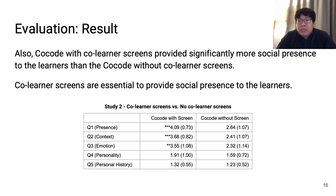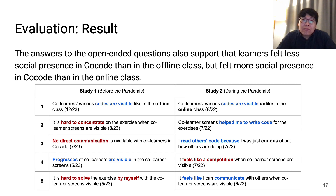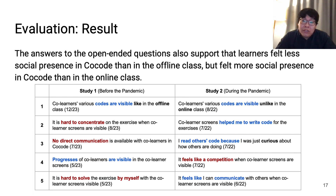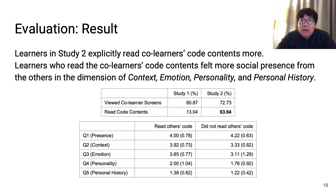Answers to the open-ended survey questions also supported these findings. More answers from learners in Study 2 showed that they preferred CoreCode over their CS1 course at the university. We also found differences between learners in Study 1 and Study 2 by observing activity logs. Learners in Study 2 explicitly read co-learners' code contents more, and those who did felt more social presence in the dimensions of context, emotion, personality, and personal history.